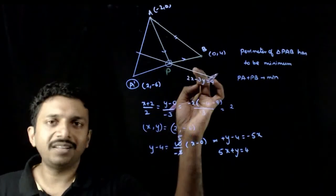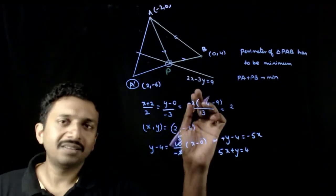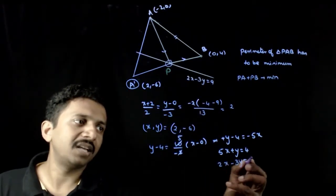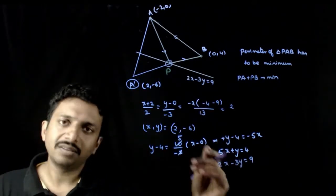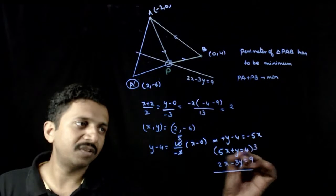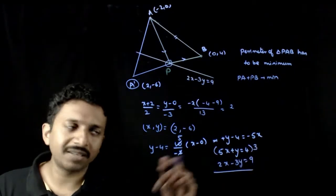To get the point P, you just need to find the point of intersection of this line and this line, that is 2x minus 3y equals 9. I want the point of intersection of these two. To do that, I will multiply this with 3. I will add them: 3y and -3y gets cancelled.